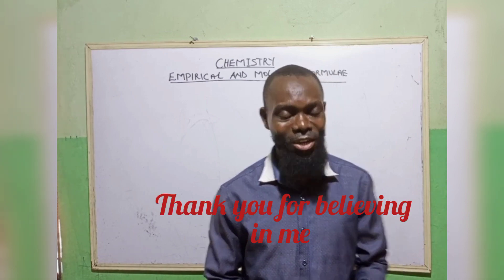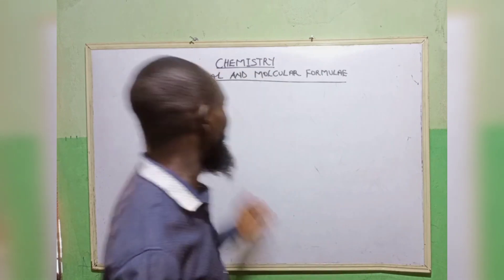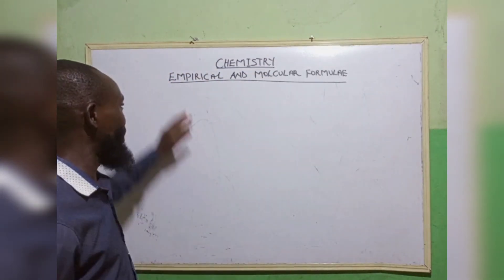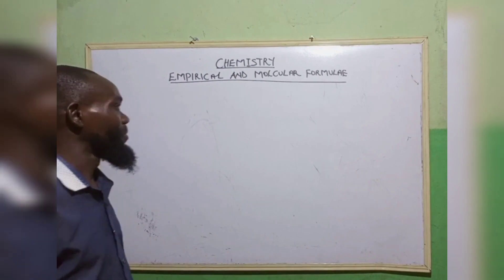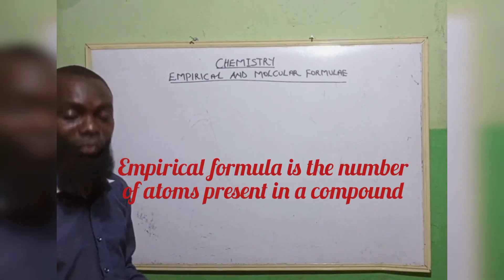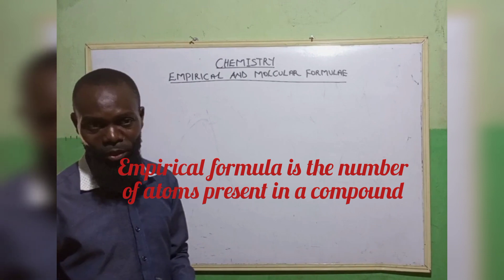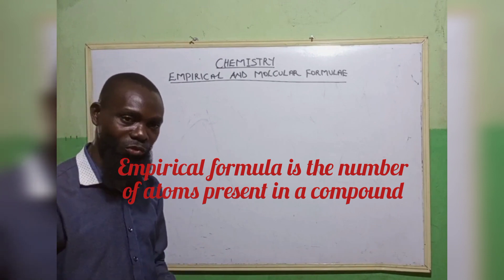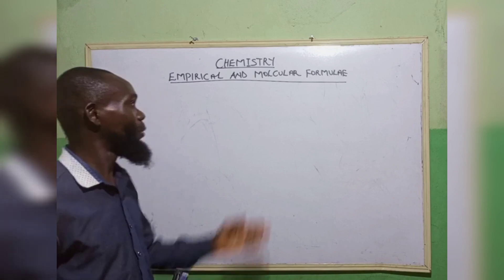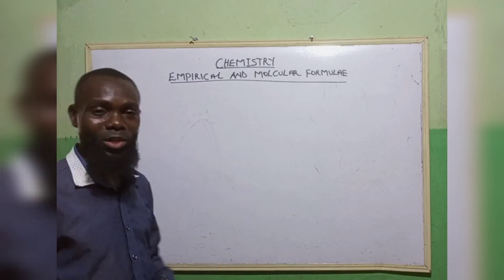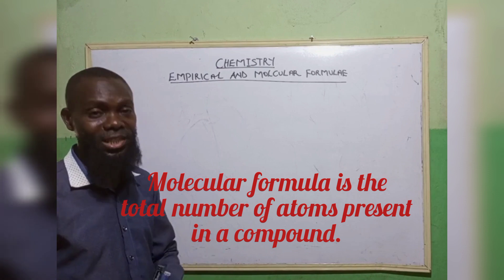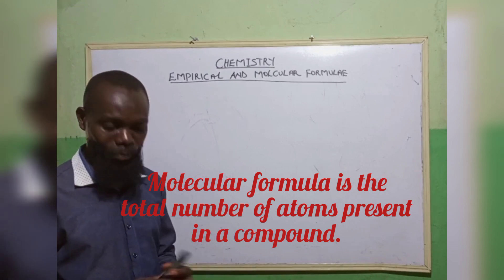Today, we are going to move on to empirical and molecular formulae. The word empirical formulae refers to the number of atoms present in the compound — that is, the ratio of the atoms present in that given compound. While the molecular formulae, these are the total number of atoms present in that compound.